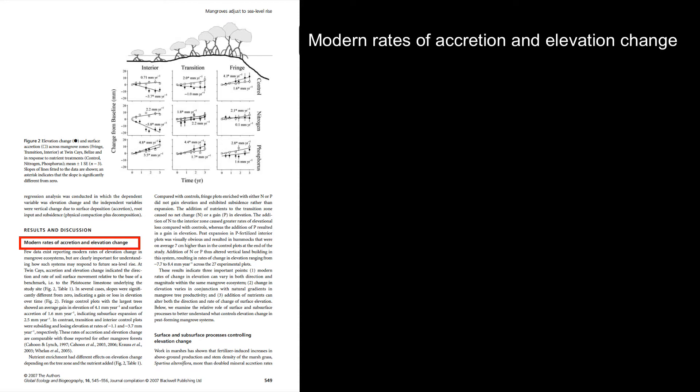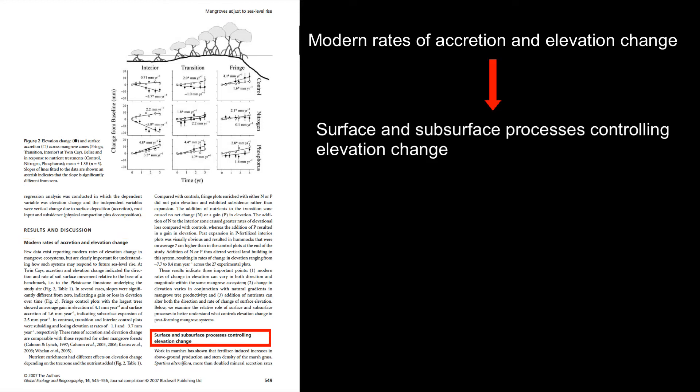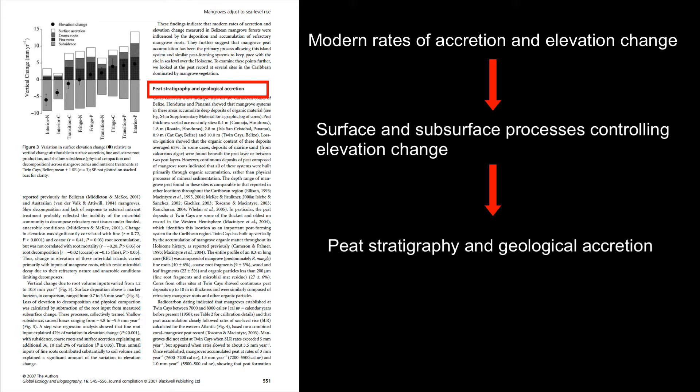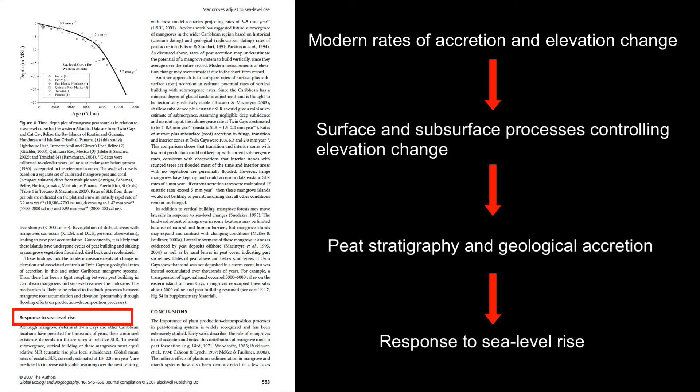The first subsection deals with modern rates of accretion and elevation change determined in this study. The second subsection focuses on surface and subsurface processes controlling elevation change. The third subsection describes past peat formation and geological accretion over thousands of years.